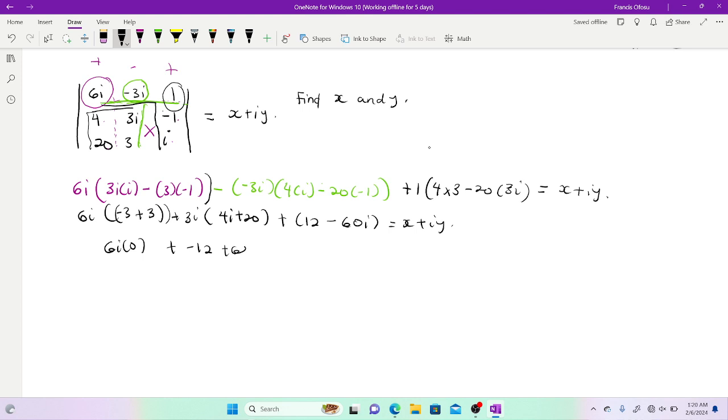12i times i is negative 1, so negative 12 plus 60i. And at this point I'll have 12 minus 60i, I'll just add it straight away. Is equal to x plus iy. This is zero, negative 12 and positive 12 will cancel. Then finally I'll have 60i canceling this, so I'll be left with zero is equal to x plus iy.